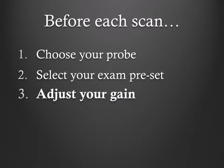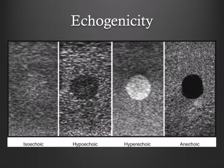Third, adjust your gain to make black structures look black — for example, fluid in a vessel. A quick review of terms: structures are termed hyperechoic if they appear bright or white, hypoechoic if they appear dark, anechoic if they appear black, and isoechoic if they appear gray in comparison to surrounding structures. As reference, bones appear hyperechoic, fat is hypoechoic, and vessel lumens appear anechoic.